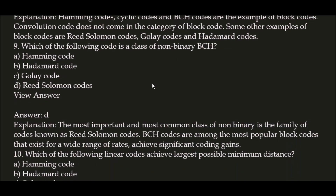Next question: which of the following codes is a class of non-binary BCH? Options: A) Hamming code, B) Hadamard code, C) Golay code, D) Reed-Solomon codes. The correct answer is option D — Reed-Solomon codes. The most important and most common class of non-binary BCH codes is the family of codes known as Reed-Solomon codes. BCH codes are among the most popular block codes with a wide range of rates achieving significant coding gains.